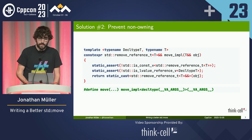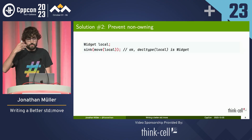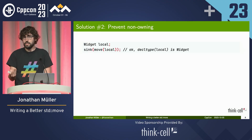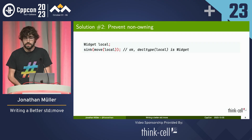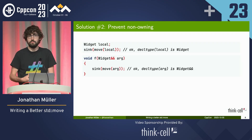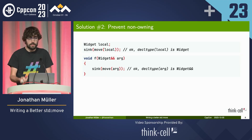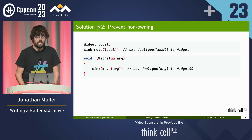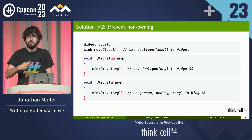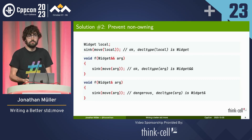Let's look at the examples. If we're moving a local, the decltype of local is widget — this is not an L-value reference, so we will safely move it. This is fine. If you have an R-value reference, decltype of that will be an R-value reference — we will move it, also fine. But if you have an L-value reference, decltype of that is an L-value reference — we trigger the static assert and require a special opt-in.